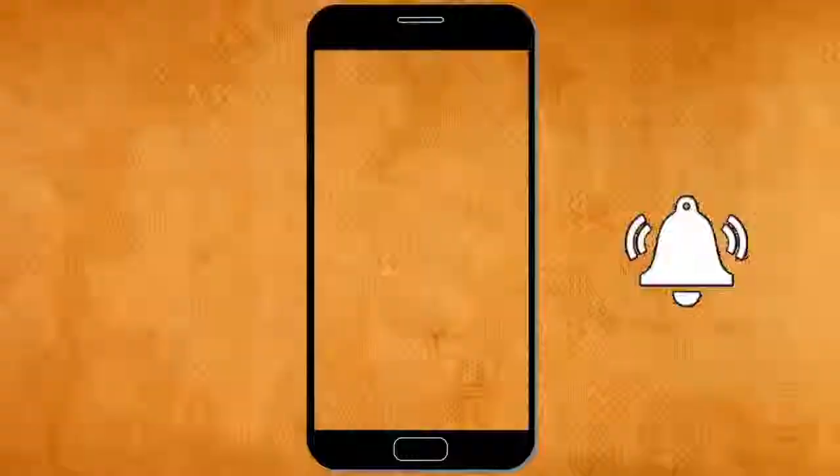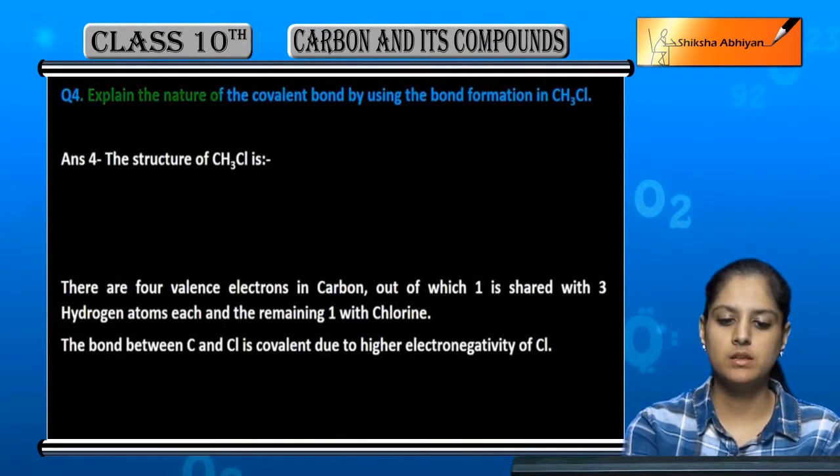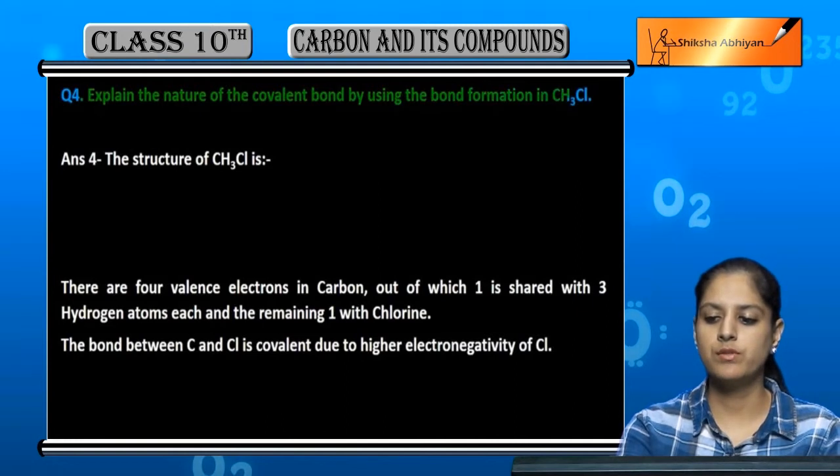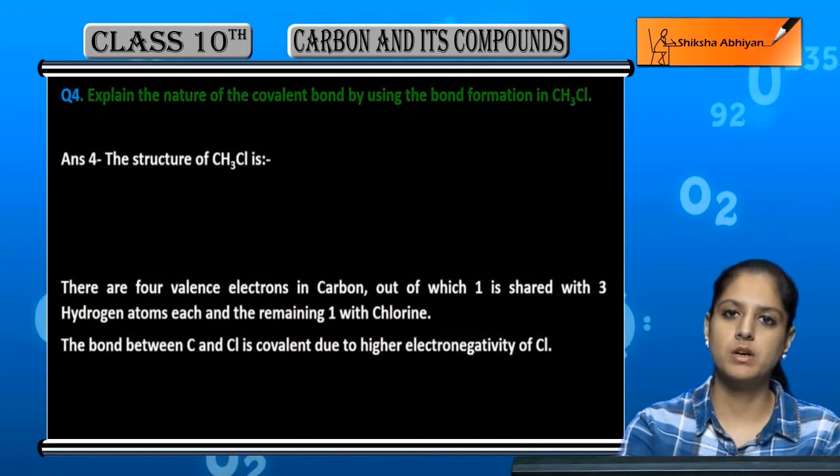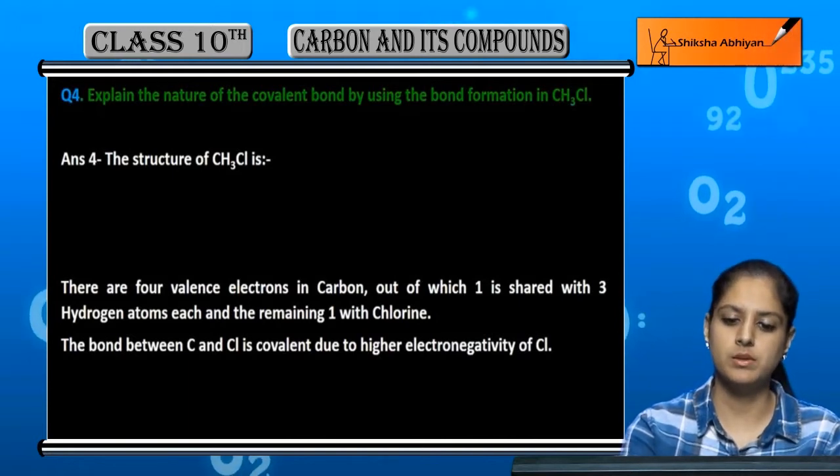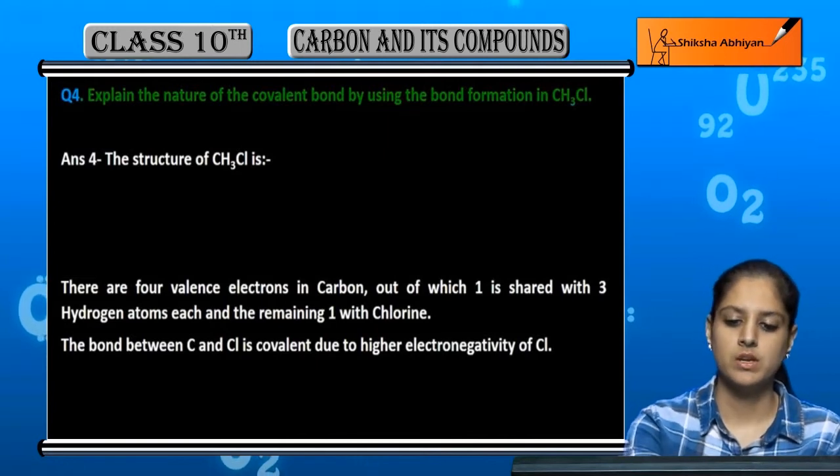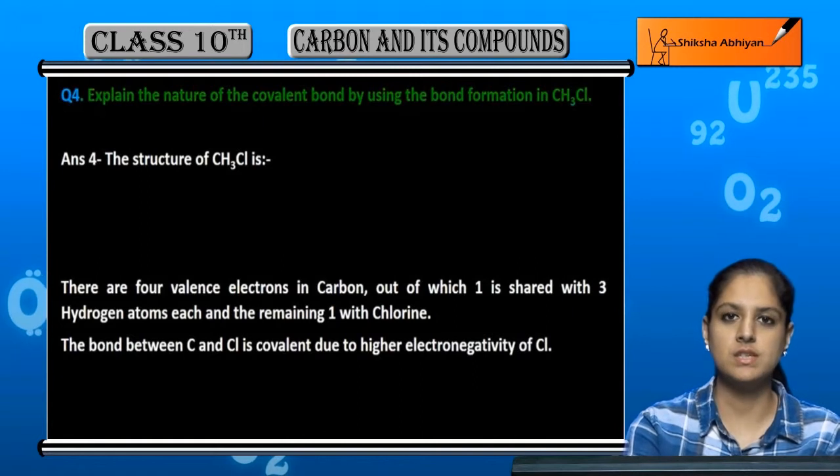Question 4: Explain the nature of covalent bond by using the bond formation in CH3Cl. In CH3Cl, we use this as an example of covalent bond formation. First, if we create a structure of CH3Cl...